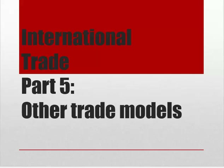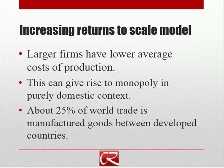In this last video segment, I want to look at some other trade models that help answer questions that the Ricardian model and the Supply and Demand model don't really do a good job of answering. The first one is what we call the Increasing Returns to Scale model. Increasing Returns to Scale comes in a couple of different varieties. The easiest to understand is the idea that larger firms have a lower average cost of production than smaller firms.